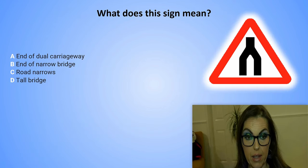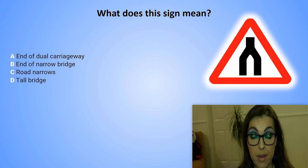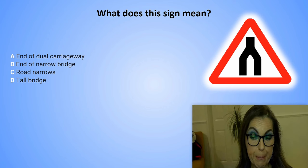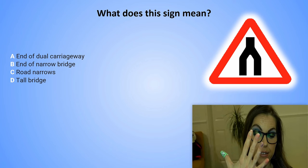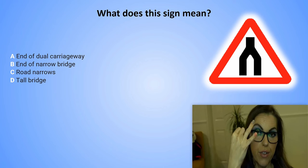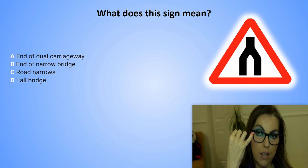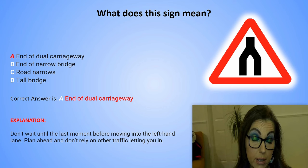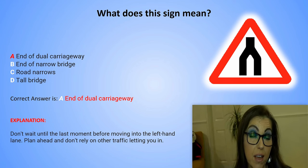What does this sign mean? A. End of dual carriageway. B. End of narrow bridge. C. Road narrows. Or D. Tall bridge. The correct answer is A. End of dual carriageway. Explanation: Don't wait until the last moment before moving into the left-hand lane. Plan ahead and don't rely on other traffic letting you in.